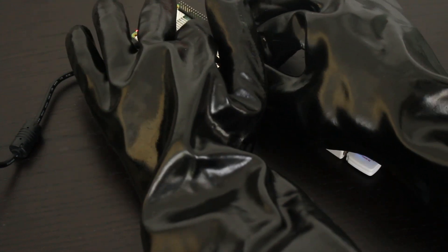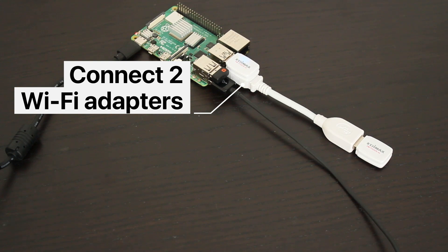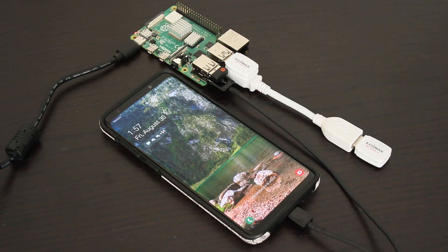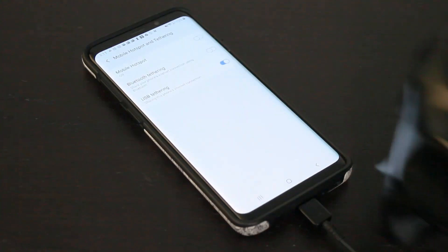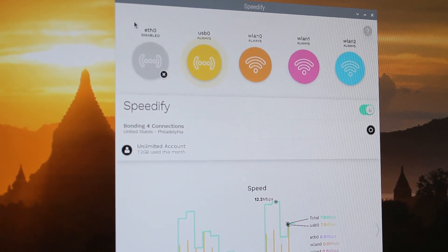Here we have the additional Wi-Fi card connected to one network with two external Wi-Fi cards connected to additional networks and a tethered phone providing an additional connection. So now we have a Raspberry Pi with four different active connections. We'll turn on Speedify to combine them into one connection.